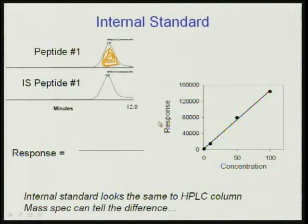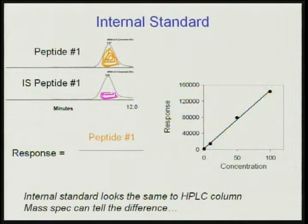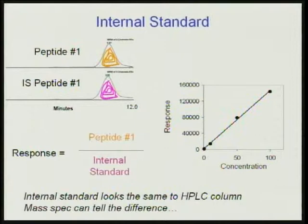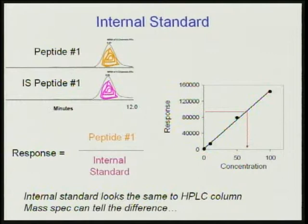Response is defined as the peak area of the peptide of interest divided by the peak area of the internal standard, which in this case is labeled with deuterium. The deuterium won't affect how it elutes off the HPLC column, but it will look completely different in the mass spectrometer because we can tell the difference in Q1 and Q3. If we have a set of calibrators and gather the response from each, we can convert that into a concentration — and that's the basis for our protein assays as well as our small molecule assays.